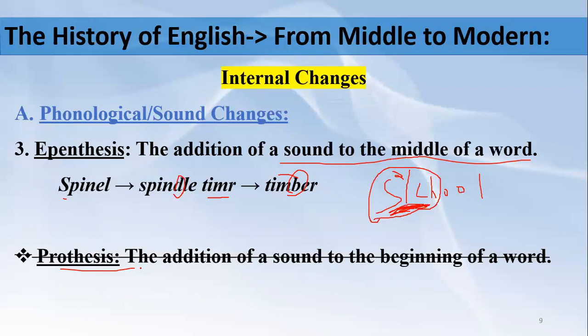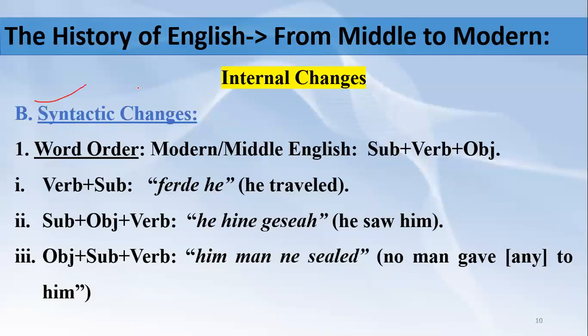Note also the process of prothesis — the addition of a sound to the beginning of a word. For example, Punjabi speakers say 'iscool' for 'school', adding a sound at the beginning. Similarly 'istation' for 'station'. However, this process did not take place in the Middle English period. These are the phonological changes.